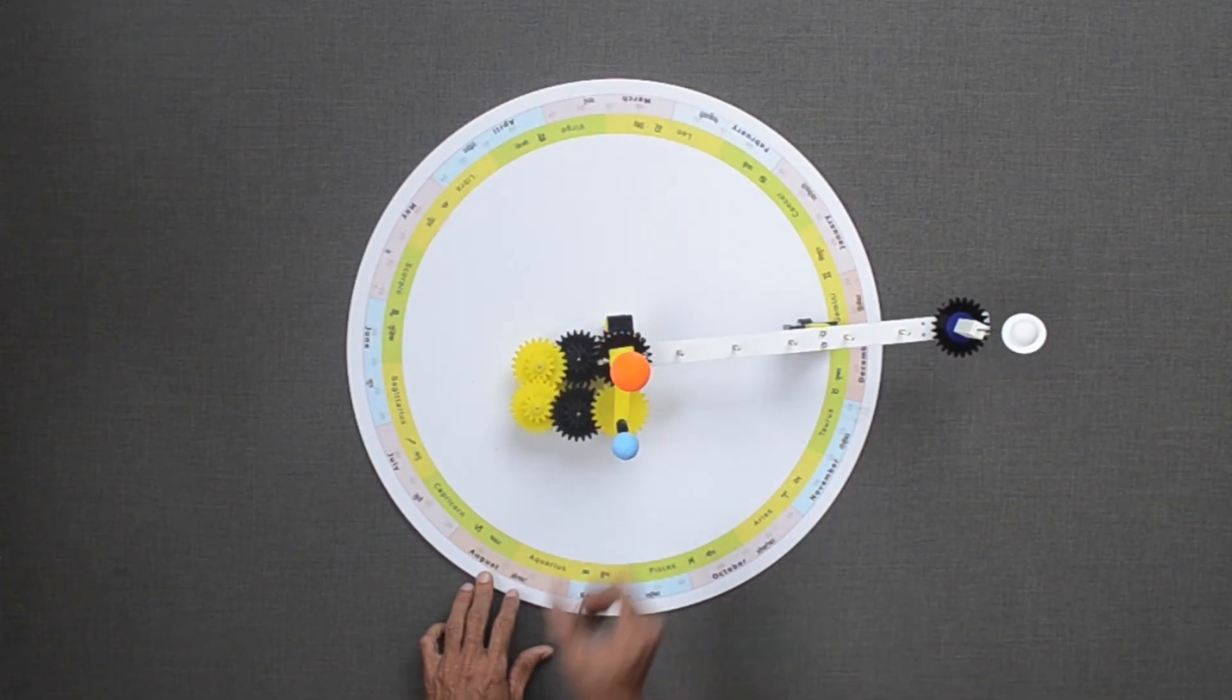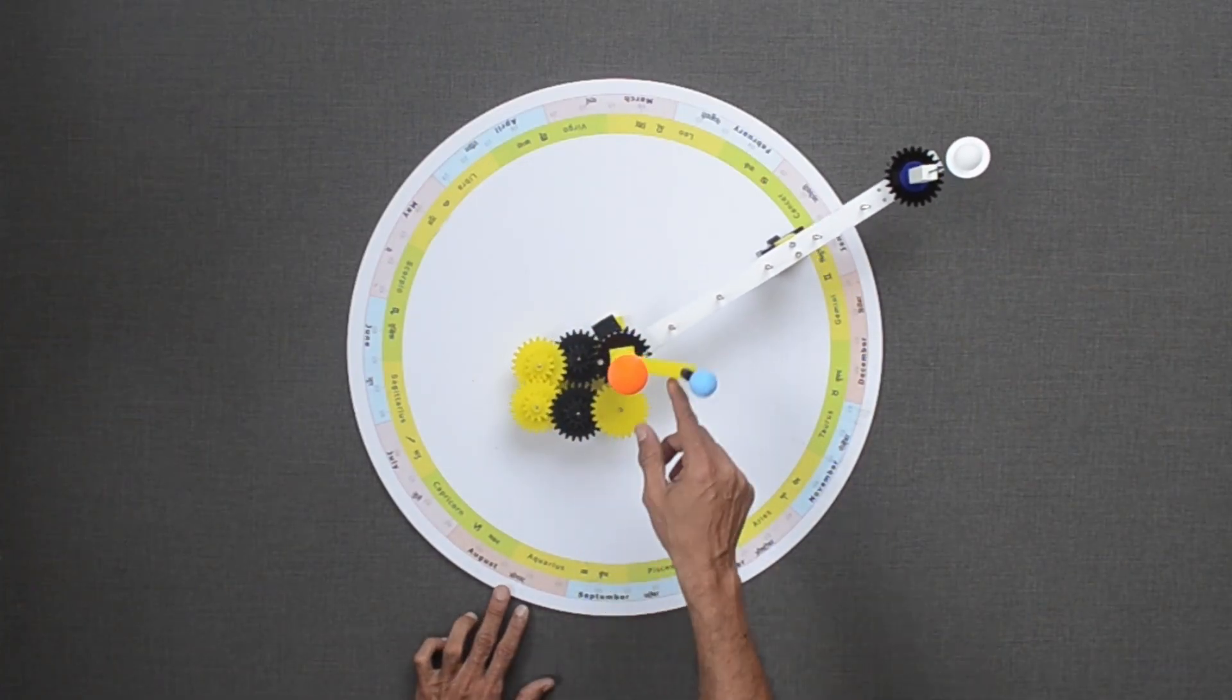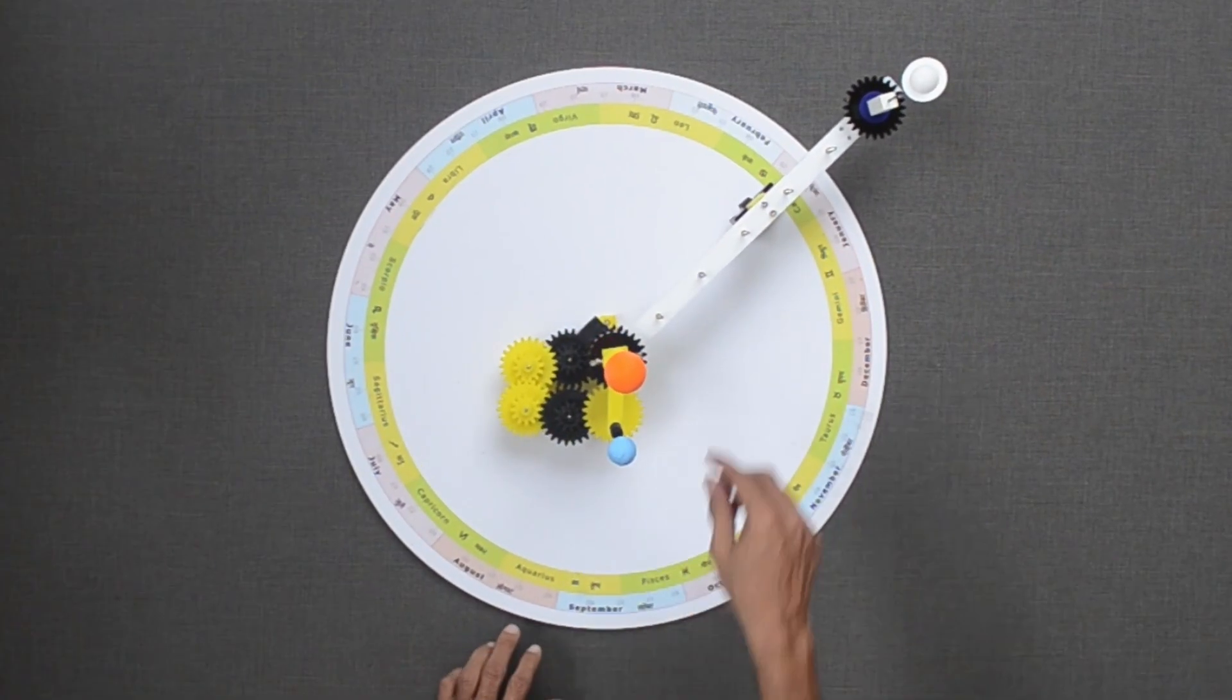Alternatively, I can move the Earth and that results in Saturn moving forward in its path by approximately 11 to 12 degrees.